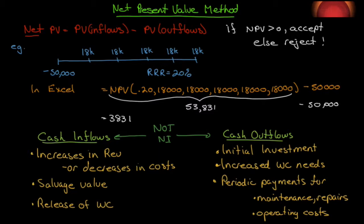With that small introduction to present value behind us, we're now ready to tackle capital budgeting. We're going to look at two ways to evaluate projects on a go or no-go basis, or an accept or reject basis. The first is net present value, then we'll follow that up with the internal rate of return, IRR. But let's focus on net present value for now.